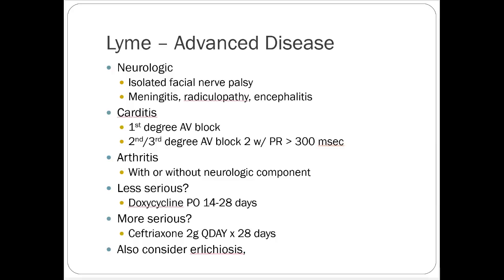There are other tick-borne illnesses: ehrlichiosis and anaplasmosis. They present very similarly to Lyme and are treated virtually the same way. If somebody doesn't test positive for Lyme but has similar symptoms, they might actually have ehrlichiosis or anaplasmosis. When Lyme disease is suspected, a panel of testing is usually done that includes these other conditions.